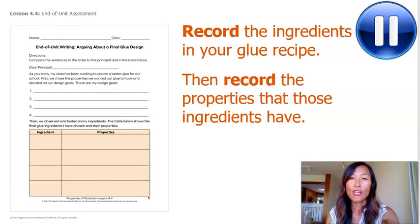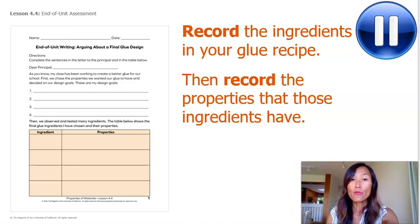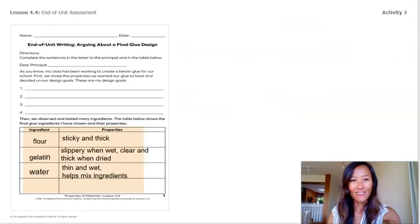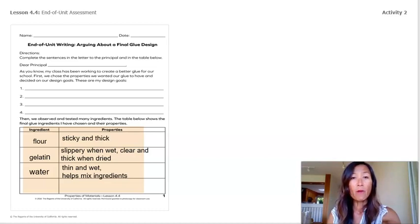Now, let's record the ingredients in your glue recipe and then record the properties that these ingredients have. This will help the principal understand what ingredients are in the glue. Pause the video to write your ingredients and properties. Here is what you should have: Ingredient — flour; properties — sticky and thick. Second ingredient — gelatin; properties — slippery when wet, clear and thick when dry. Water; property — thin and wet, helps mix ingredients.